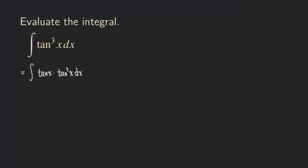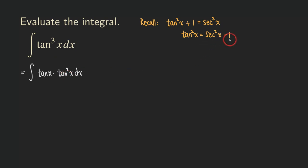Let's recall that identity. We are going to use the tangent and secant version of the identity. So if we have tangent squared of x plus 1, that equals secant squared of x. What we can do is isolate the tangent square, and we get tangent squared x equals secant squared x minus 1. So I'm going to replace this tangent square by secant squared x minus 1.